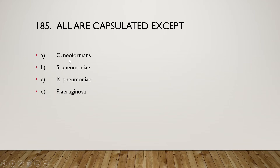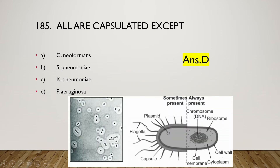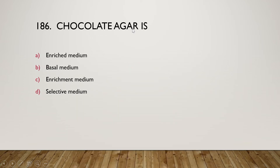Next question: all are capsulated except Corynebacterium, Cryptococcus neoformans, Staphylococcus pneumoniae, Klebsiella pneumoniae, or Pseudomonas aeruginosa? The right answer is option D, Pseudomonas aeruginosa is a non-capsulated one. The capsule is present on the outside of the cell wall. It is required for adhesion to other cells and is a virulence factor of the bacterial cell.